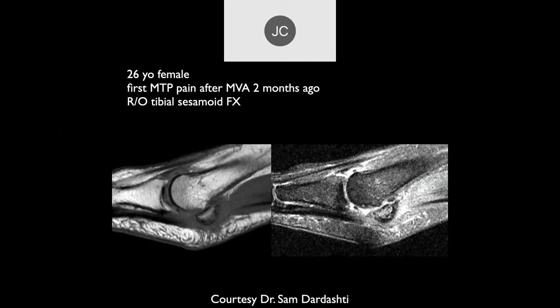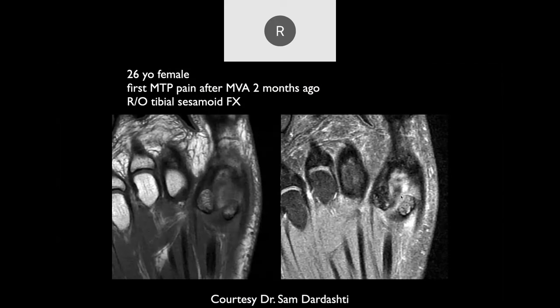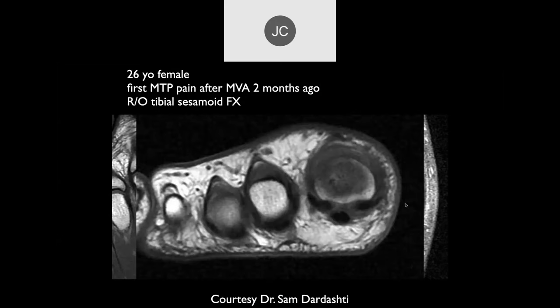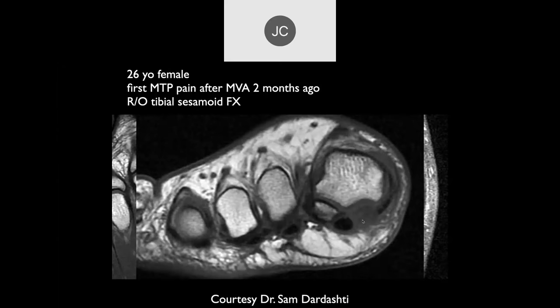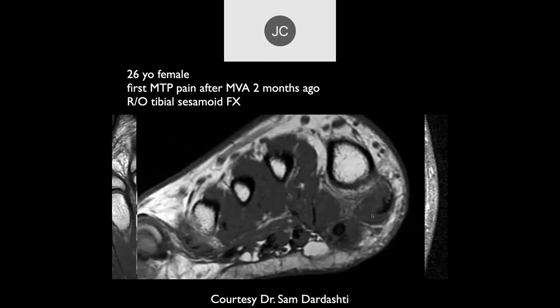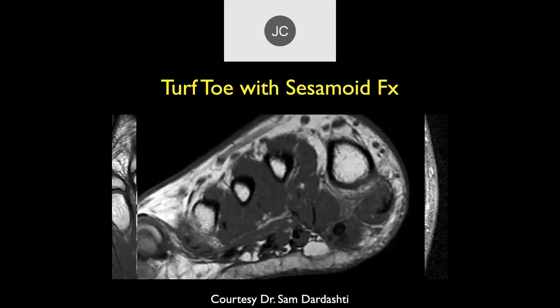A 26-year-old female with first MTP pain after an MRI two months ago, rule out tibial sesamoid fracture. The tibial sesamoid looks retracted — probably there's a tear of the plantar plate. Following multiple images we can see the abnormality with a sesamoid fracture, displacement at the fracture site, and edema in the medial sesamoid. This patient came in with symptoms of turf toe.